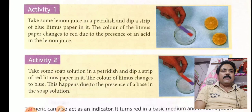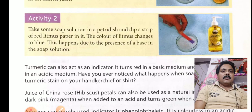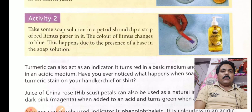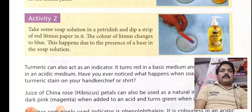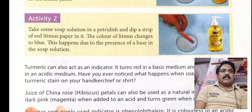For the second activity, take some soap solution in a petri dish and dip a strip of red litmus paper in it. The color of the litmus changes to blue. This happens due to the presence of a base in the soap solution. So to summarize: blue litmus turns red in acid, and red litmus turns blue in base.